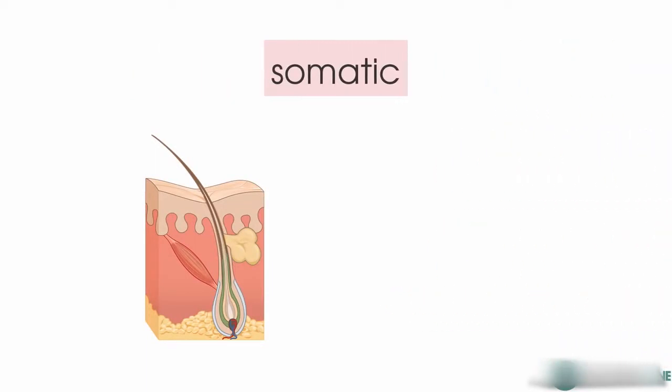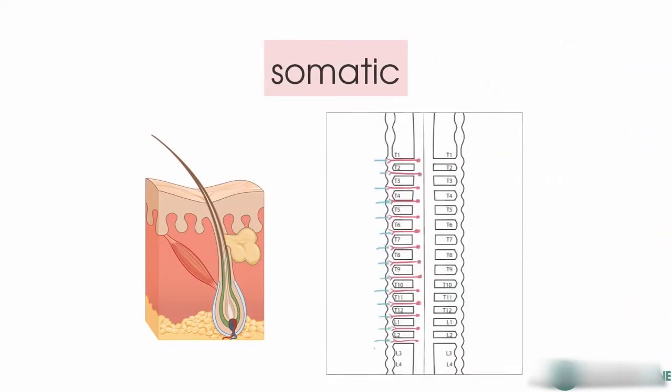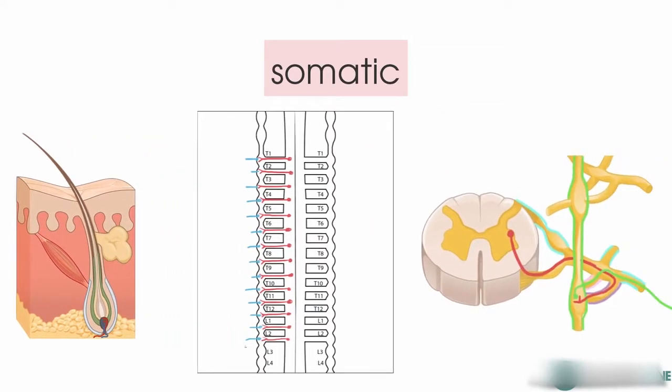Each spinal nerve has a contribution from at least one grey ramus, and this supplies a segmental skin area with these sympathetic fibres. This setup is like the first example we looked at in the previous tutorial, where the sympathetic fibre leaves the ventral horn and enters the sympathetic ganglion via the white ramus, and then forms a synapse with the postganglionic neuron, which leaves via the grey ramus and travels in the spinal nerve to supply the skin.